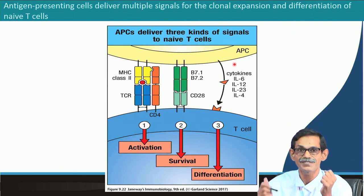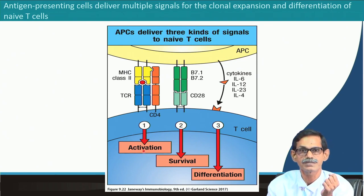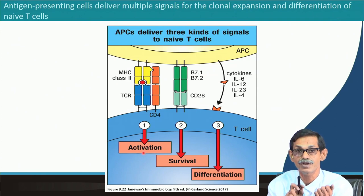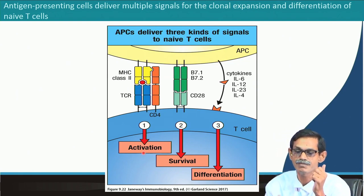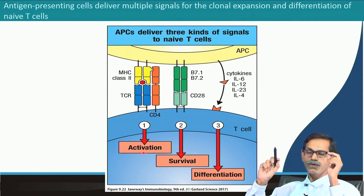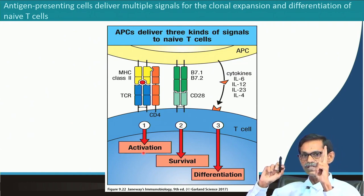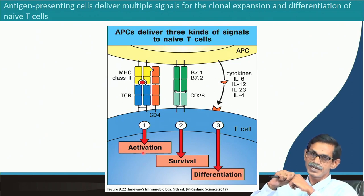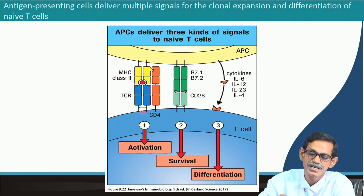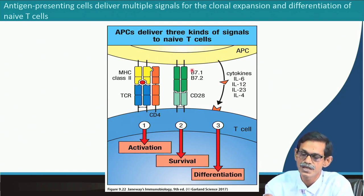After that, the MHC–TCR interaction gives a signal to the T cell for activation. Multiple signals are required for T cell activation — if only one signal could activate the T cell, mistakes could happen. Both B cell and T cell activation needs a minimum of 2 signals; a single interaction alone will not activate either. So the TCR–MHC complex interaction definitely gives a signal for activation, but it needs a second signal.